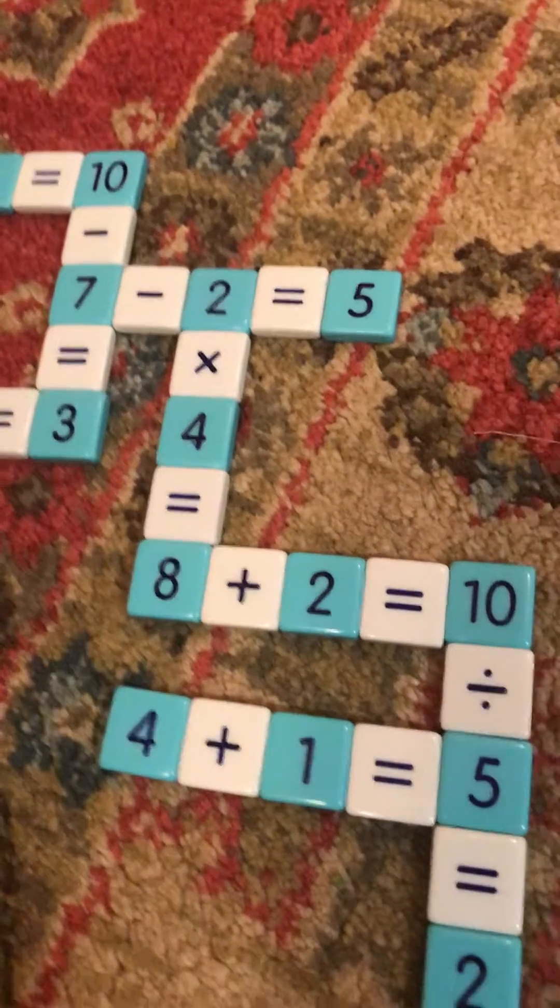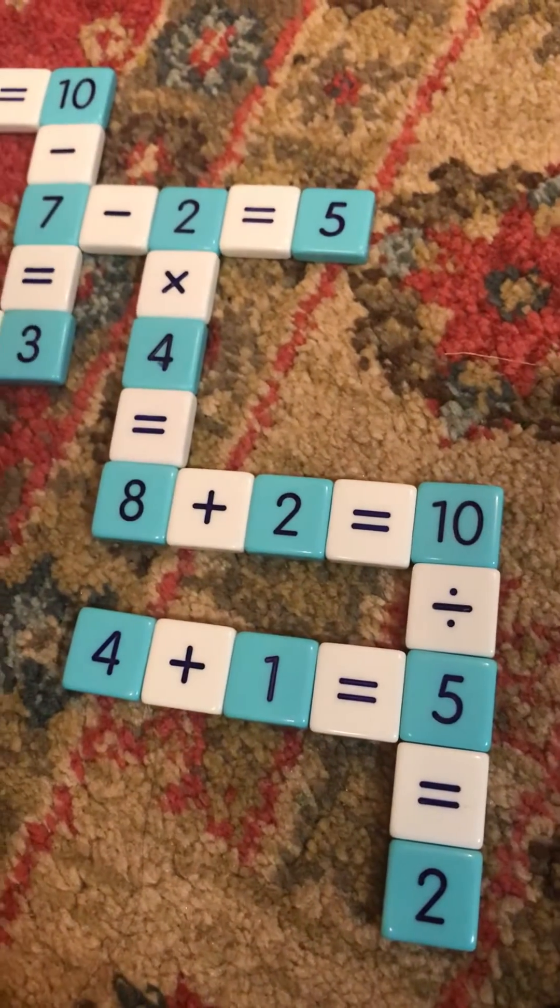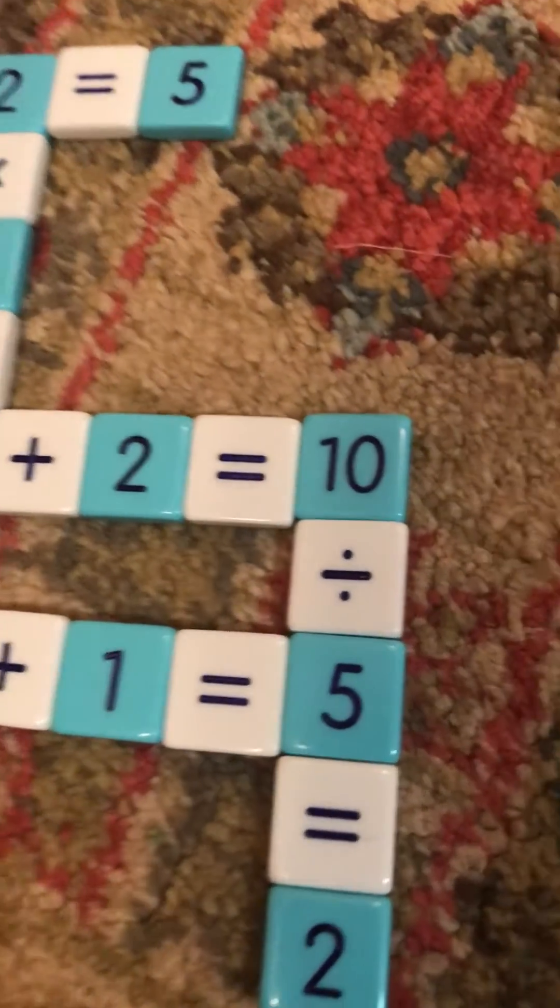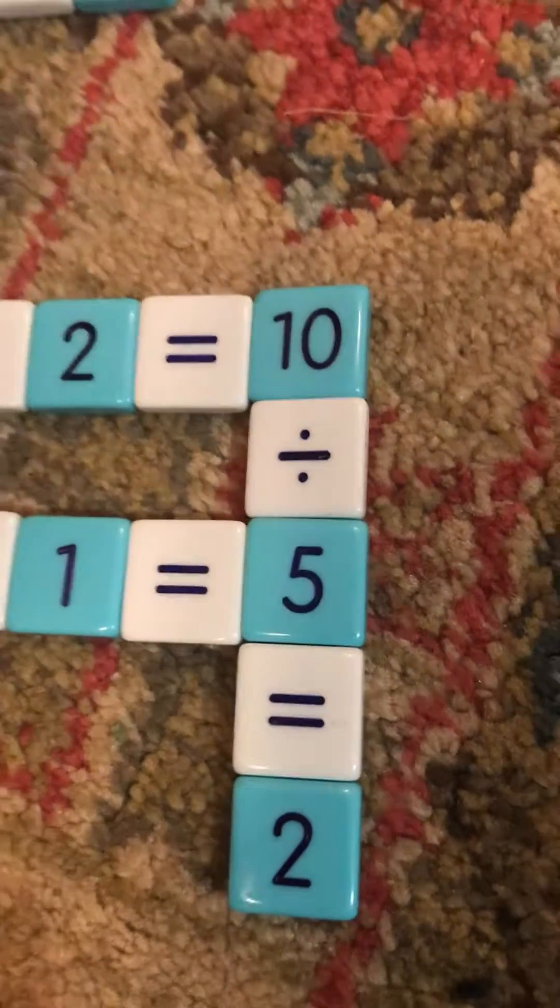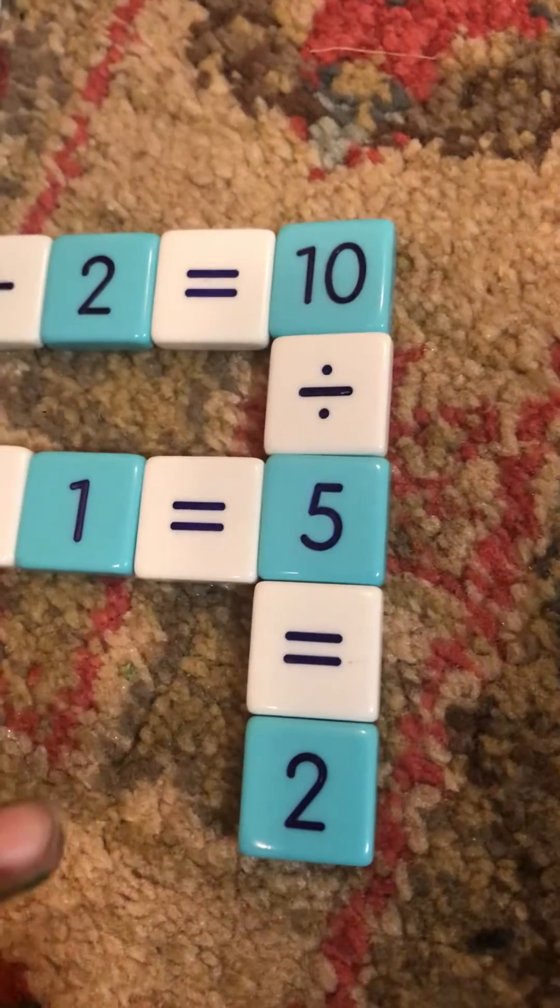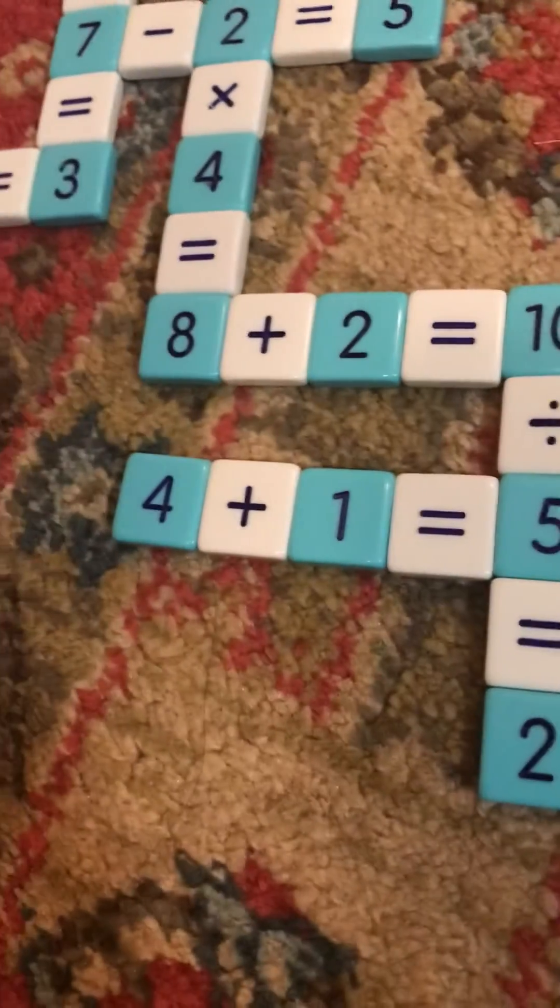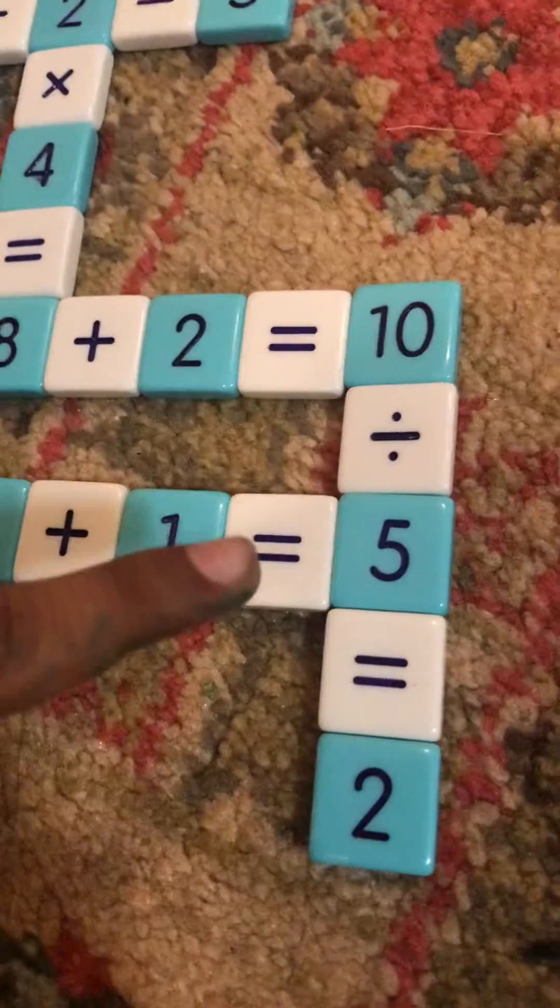Now is another number box to 10, that means it's 8 plus 2 equals 10. There's a division down, that means it's 10 divided by 5 equals 2. There is another addition to 5, 4 plus 1 equals 5.